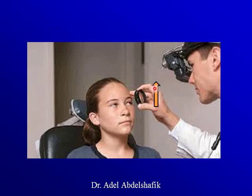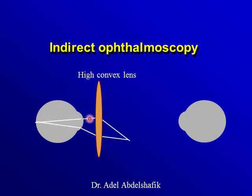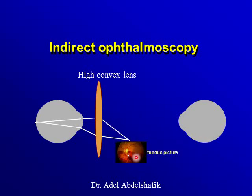So we have an inverted image in the space here, and the observer — the doctor — accommodates to see it. This is the principle: we use a high convex lens to receive rays coming from the fundus in parallel, which then form an image at the focal point of this lens, and the doctor needs to accommodate to see this inverted image.